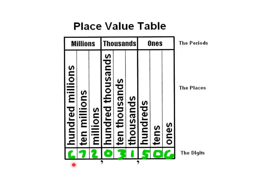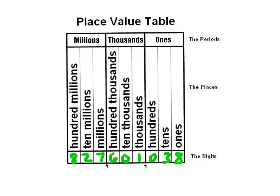Like this number again: 672,031,506. Here I have another number written into that place value chart, so concentrate on each of the periods. In this millions period we have 827, which is pronounced 827. So this number, if we need to say it, would be 827,601,038.